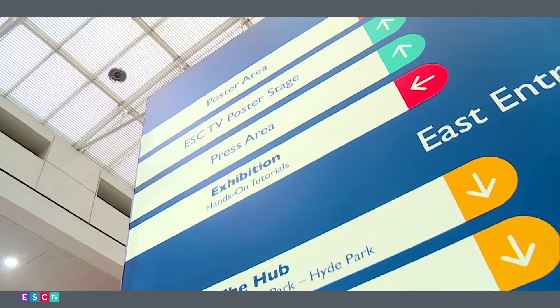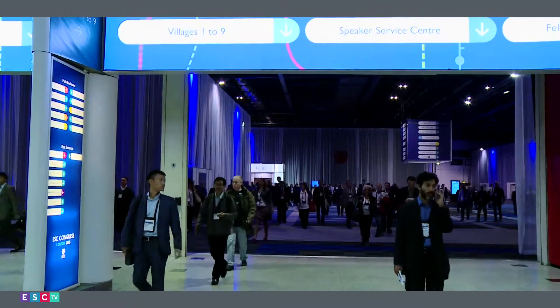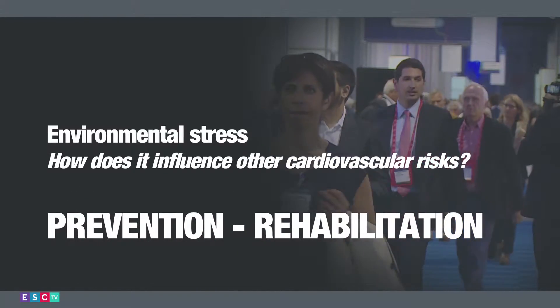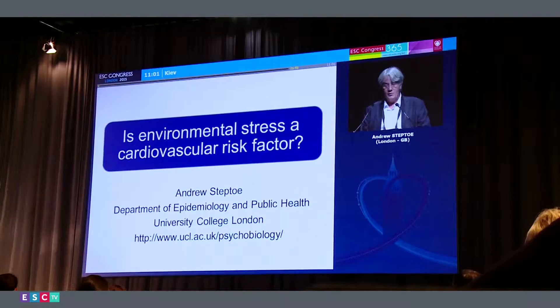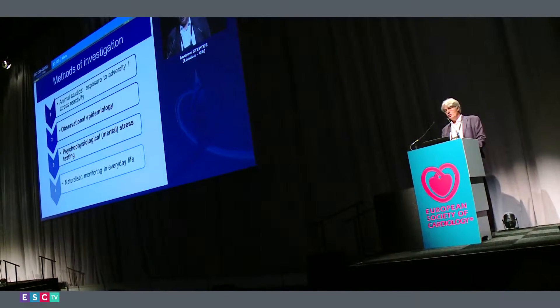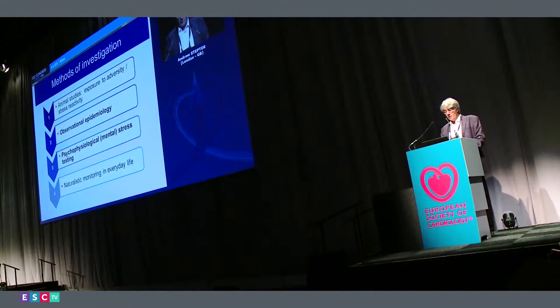When we think about stress in the population, the difficulty is we can't do an experiment on stress in the way that we can with some other factors. We can't randomize half the population to have high levels of work stress and half to have low levels. So we always have to think in terms of whether this is really a causal relationship, or perhaps there's something else underlying the association between stress and heart disease — these are quite important and difficult scientific problems.